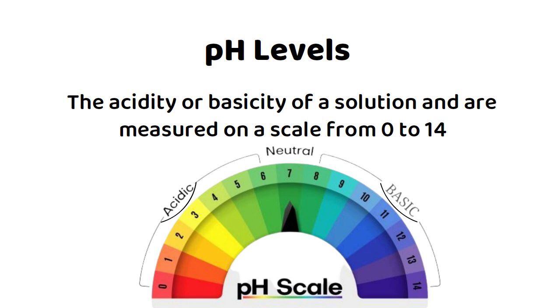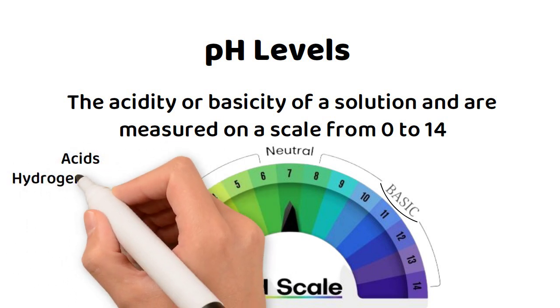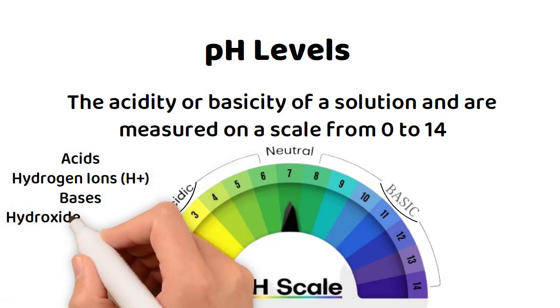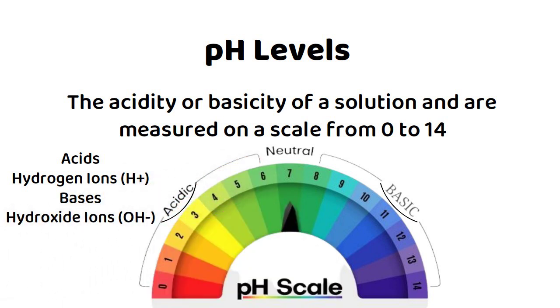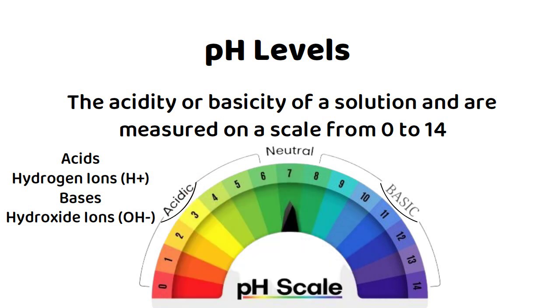The pH of a solution is determined by the concentration of hydrogen ions (H+) for acids, and hydroxide ions (OH-) for bases in the solution. The further away from 0 the substance is, the more acidic or basic it is.